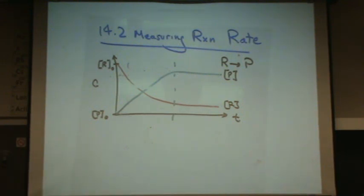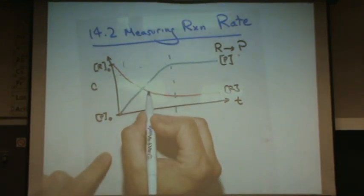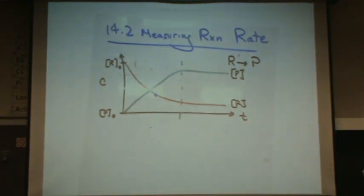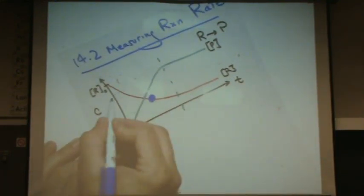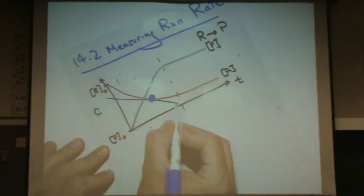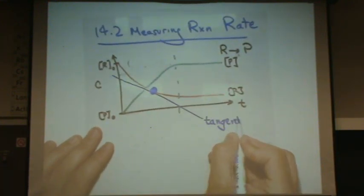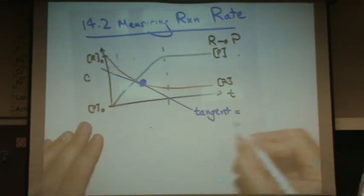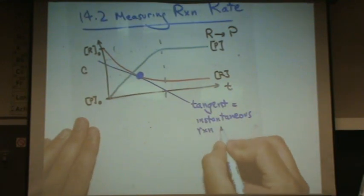Let's say I wanted to know the rate right here. What's the rate of reaction right there? Well, first of all, you draw a bigger dot. And then you draw what's called the tangent line to that dot. So this is the tangent. And this is the instantaneous reaction rate.